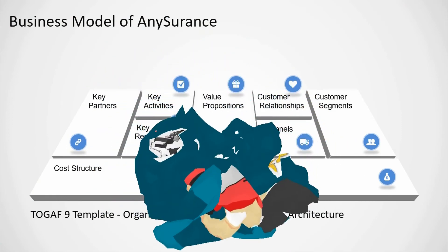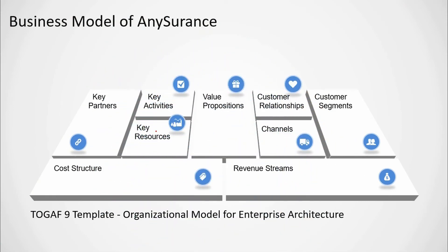Let's go to the next section. In the preliminary phase, you need to understand the business model of the organization. The business model of Any Insurance looks like this, where they have key partners, key activities, key resources, value propositions, customer relationships, channels, customer segments, cost structure, and revenue streams. You can have a look at the TOGAF deliverables section for the organizational model for enterprise architecture document for better understanding.